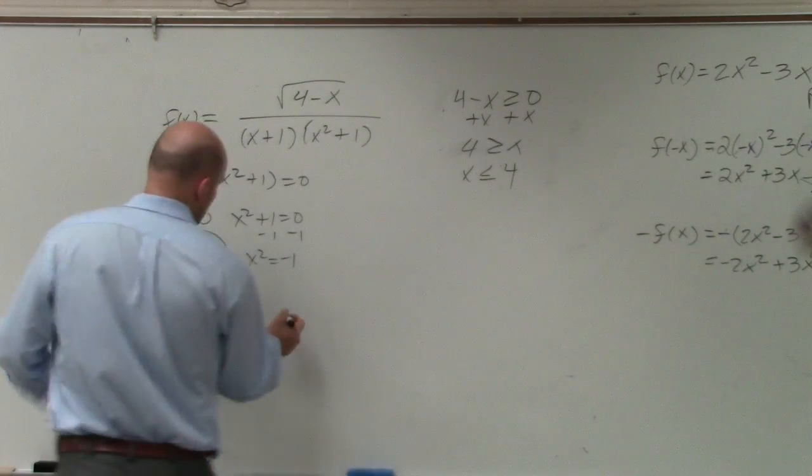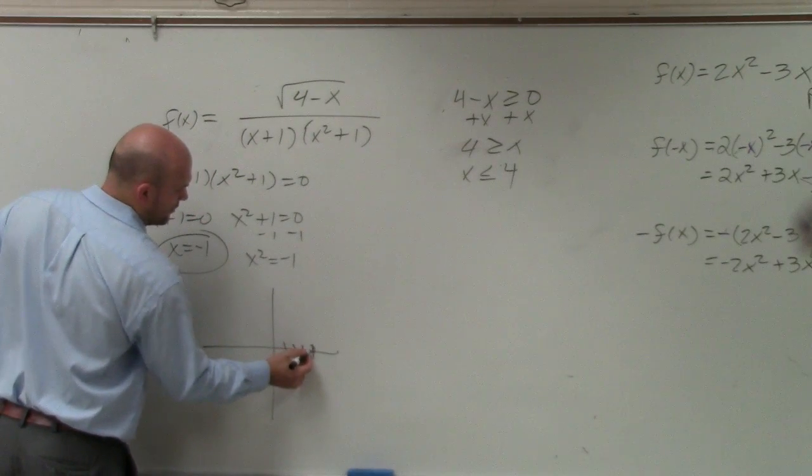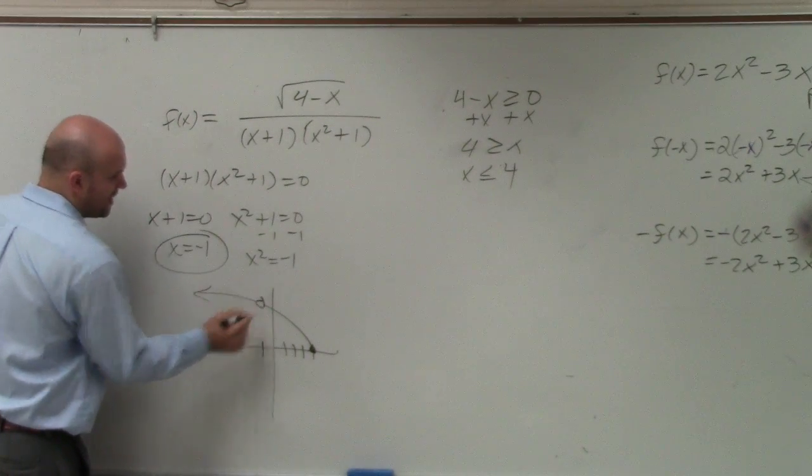So the graph kind of looks something like this. 1, 2, 3, 4. So it works at 4. It's going less, but it can't equal negative 1. So there's some hole or asymptote there.